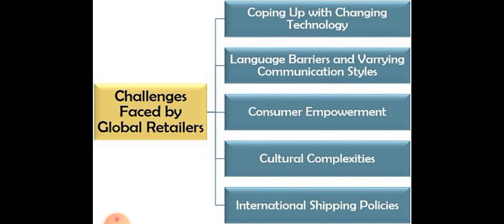Now we can see some of the challenges faced by global retailers. When you are doing business across borders, in more than two or three countries, you have to overcome various problems. The first challenge is coping up with technology. Technology means not only computers — even machinery at the production level, distribution level technology, the kind of vehicles and mode of transport. The challenge is how we are going to adopt uniform technology compared to other competitive companies.